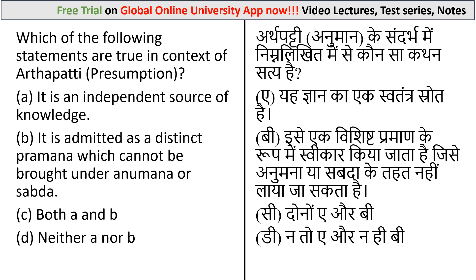Question: Which of the following statements are true in the context of Arthapati? Statement 1: It is an independent source of knowledge. Statement 2: It is admitted as a distinct pramana which cannot be brought under Anumana or Shabda. Option C is both A and B, and option D is neither A nor B. Arthapati is the fifth of five means of knowledge — a pramana by which one obtains accurate knowledge through postulation. The correct answer is option C: both statements are correct.